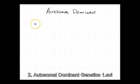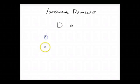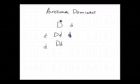In an autosomal dominant disease, a single defect in any one of those genes will lead to the disorder. The best way to describe this is to draw out the Punnett square and make the cross between this individual who contains the gene and this individual who doesn't.